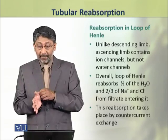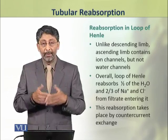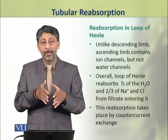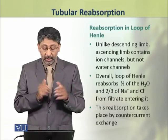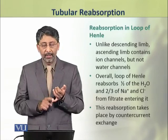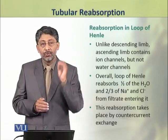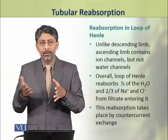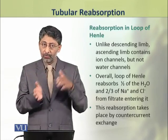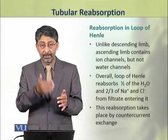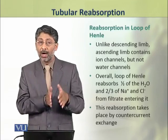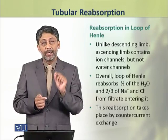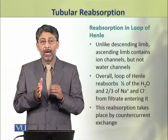Unlike the descending limb, the ascending limb contains ion channels but not water channels۔ اس لئے اس سے ions کی reabsorption ہوتی ہے جبکہ water زیادہ reabsorb نہیں ہوتا۔ Overall, the loop of Henle reabsorbs about half of the water and two-thirds of the sodium and chloride ions which enter into it in filtrate form from the proximal convoluted tubule. اس کا half water اور two-thirds ions loop of Henle میں absorb ہو جاتے ہیں۔ This absorption takes place by a special mechanism called countercurrent exchange or countercurrent multiplication.